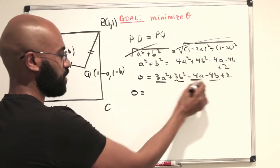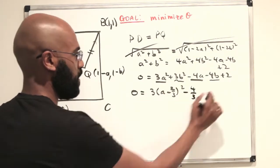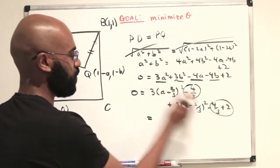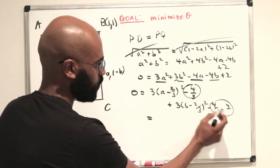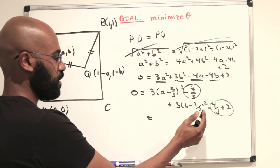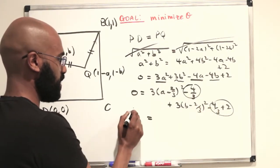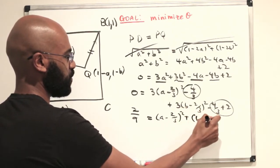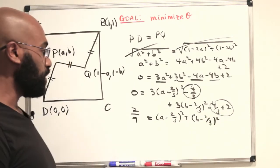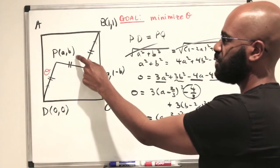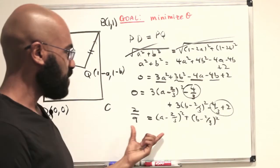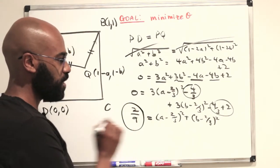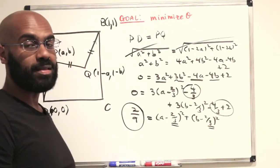We'll work with the A terms and the B terms separately and complete the square. Taking all the constants, moving them over, and dividing by 3, we get 2 minus 8/3, which is 2/3, so there's a 2/3 term; dividing by 3 gives 2/9. We're left with (A minus 2/3) squared plus (B minus 2/3) squared equals 2/9. That tells us the point (A, B) — point P — lies on a circle whose radius squared is 2/9 and whose center is at (2/3, 2/3).